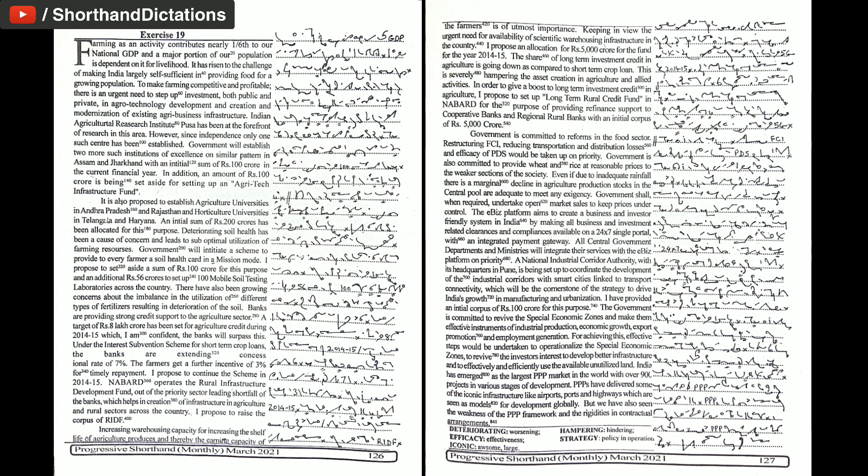Government will establish two more such institutions of excellence on similar pattern in Assam and Jharkhand with an initial sum of Rs. 100 crore in the current financial year. In addition, an amount of Rs. 100 crore is being set aside for setting up an agri-tech infrastructure fund.